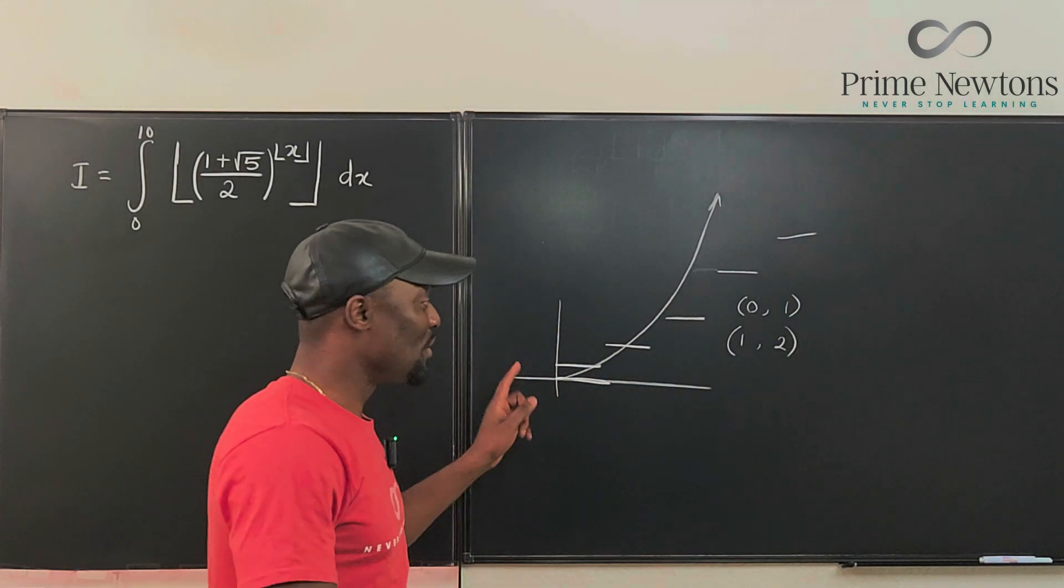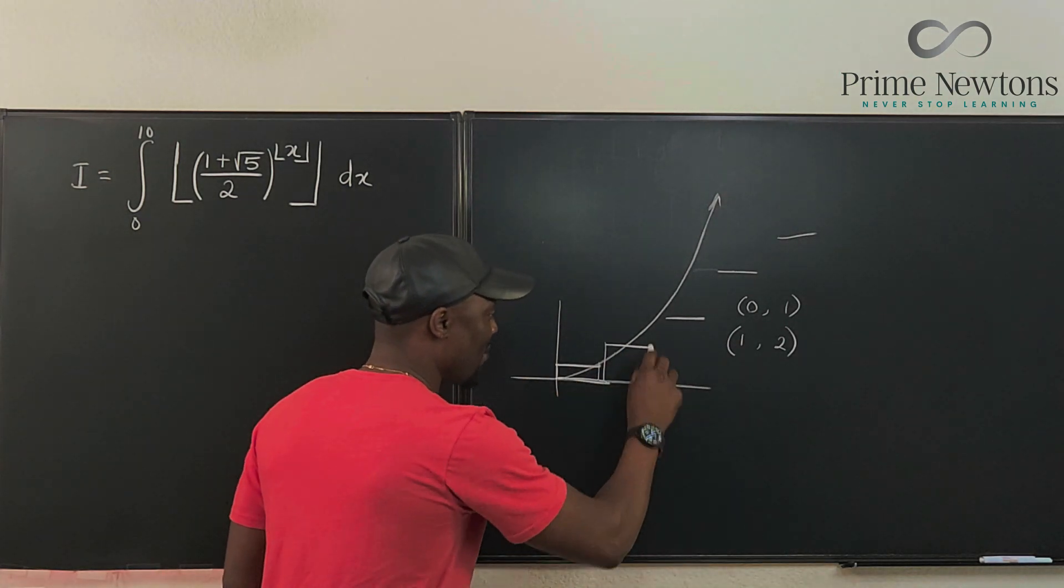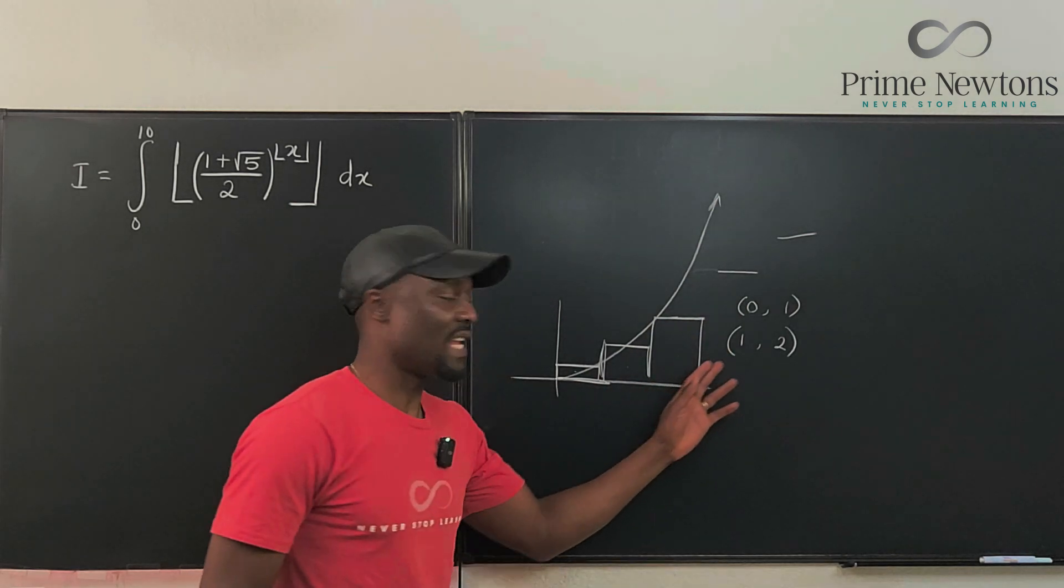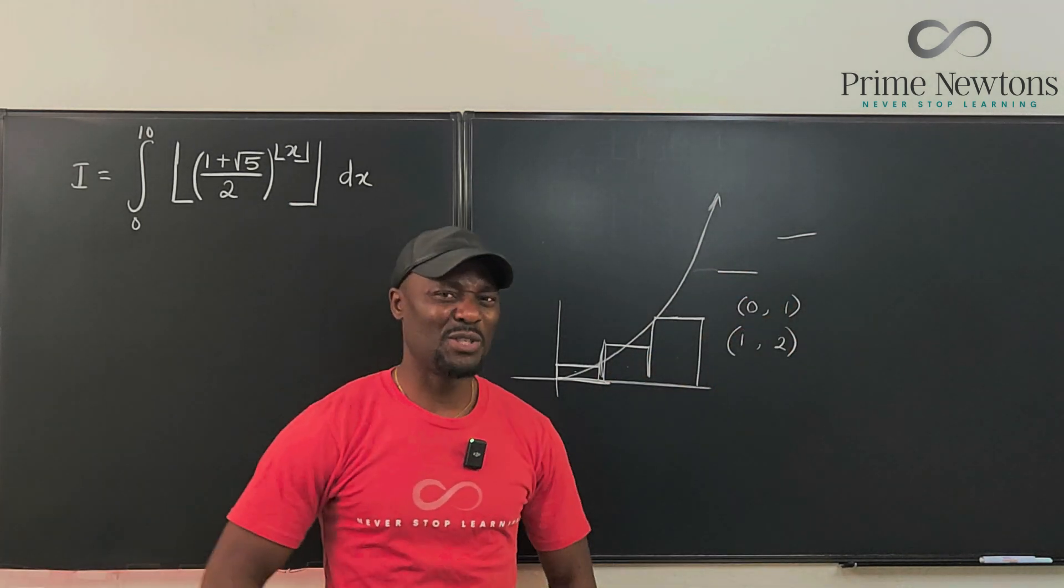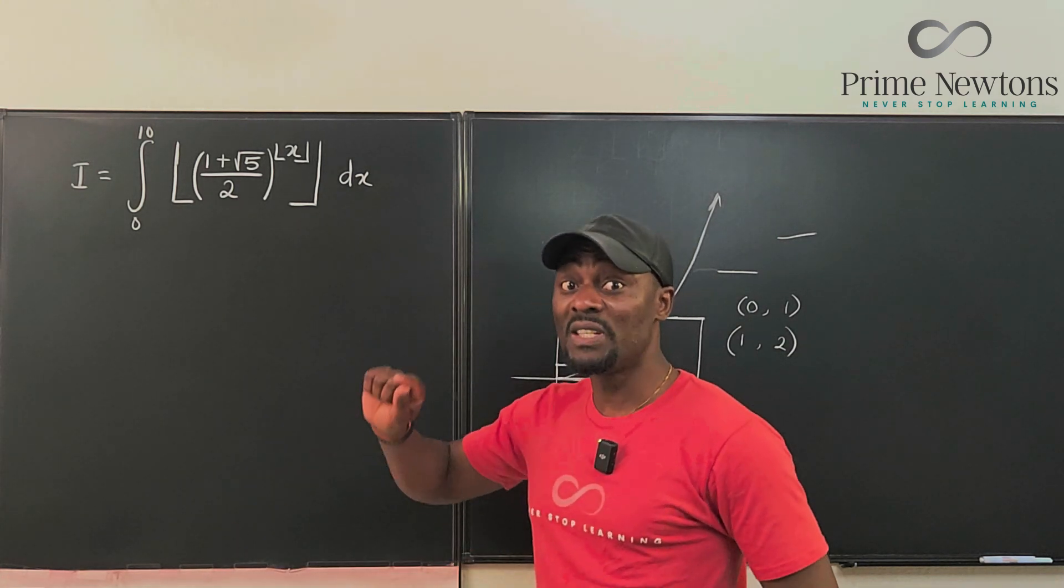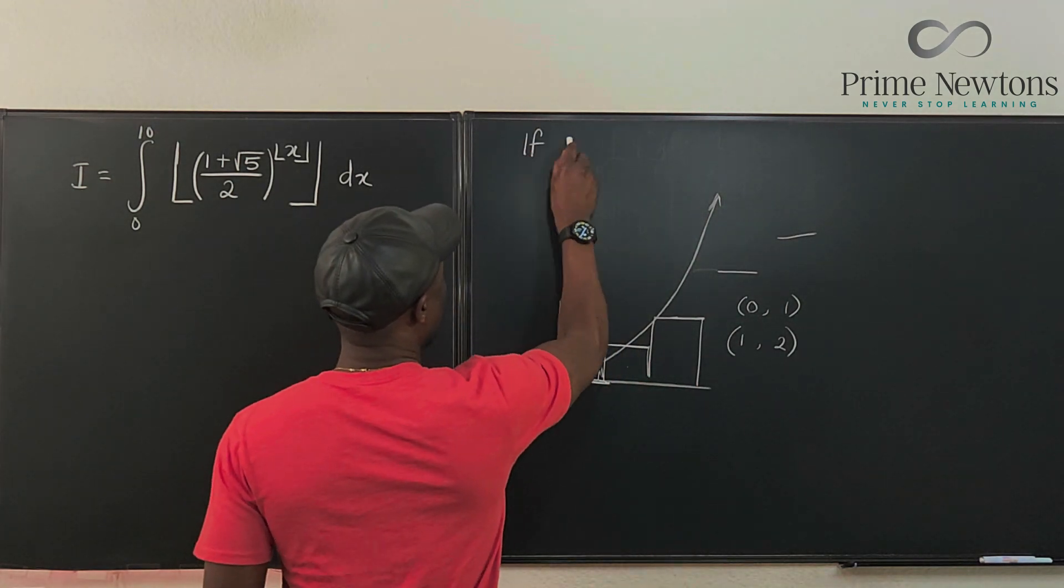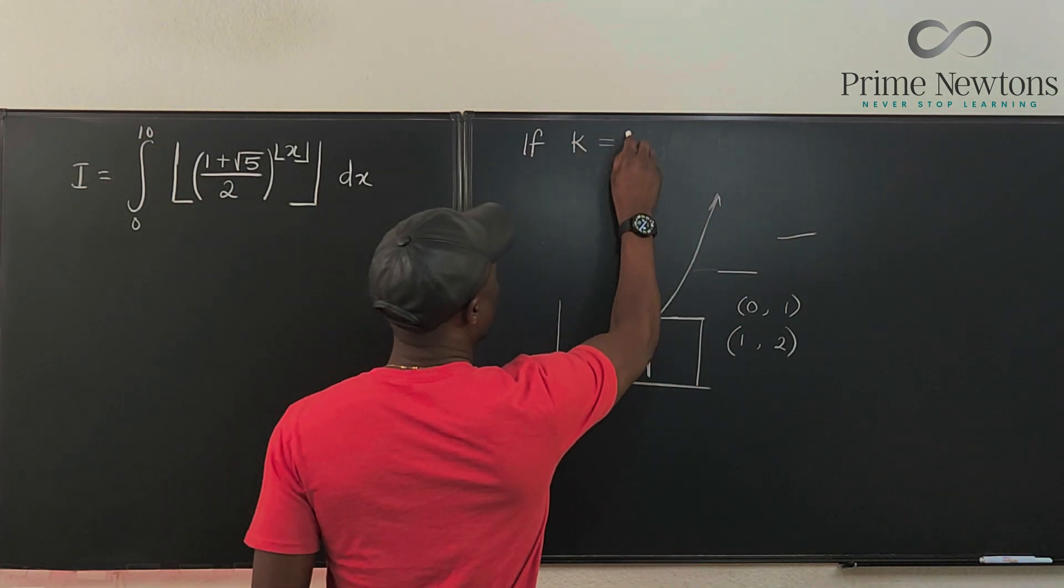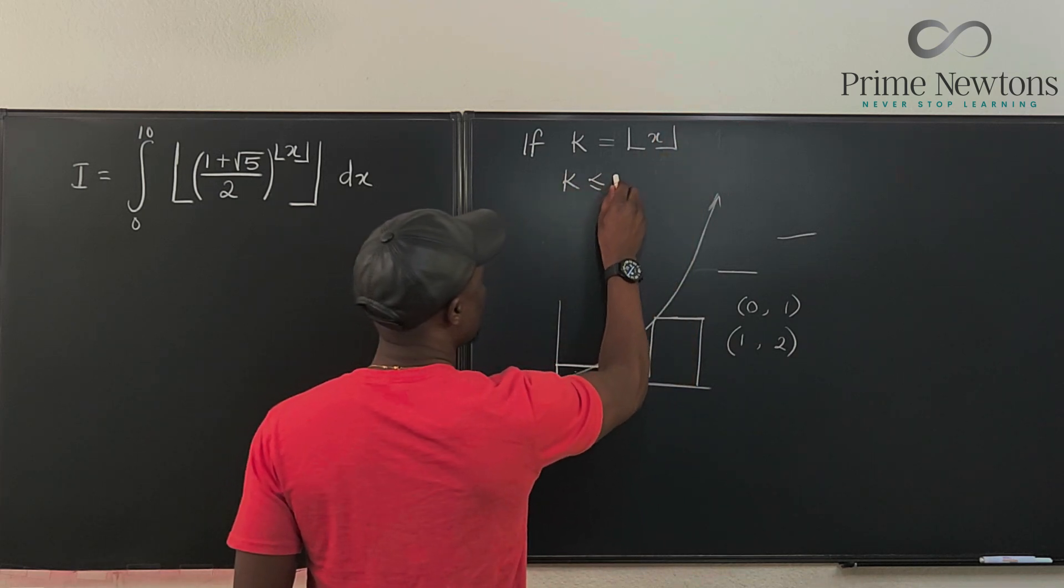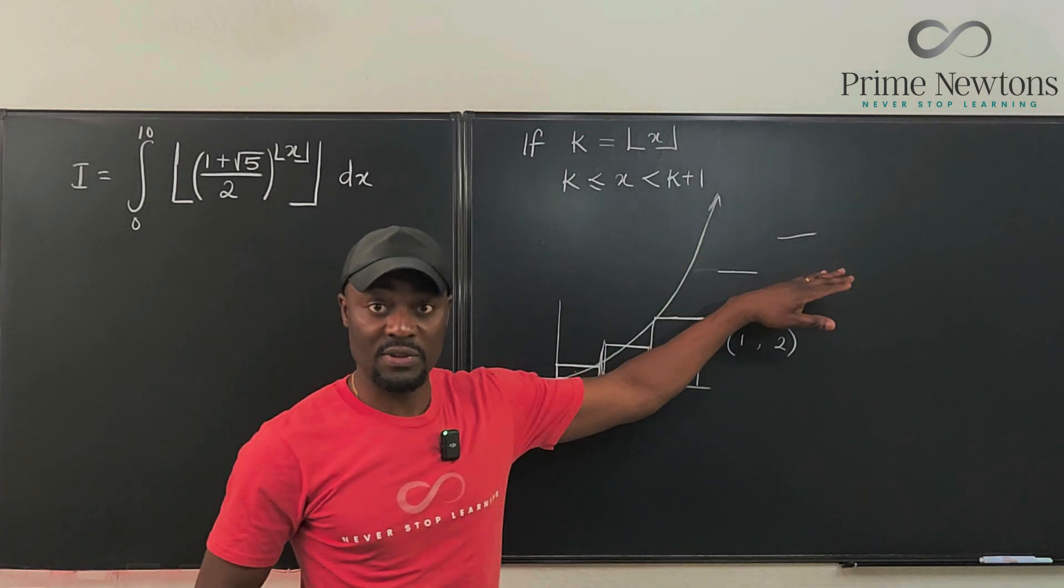So what we're integrating from zero to 10 is basically a bunch of rectangles like this. We just add up all of these. It's more like a Riemann sum. So that means if we use the definition of the floor, we can say, if K is equal to the floor of X, then we can say that K is less than or equal to X and X is less than K plus one. This is the definition of the floor function.